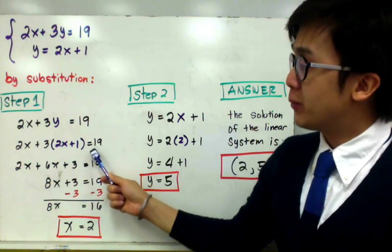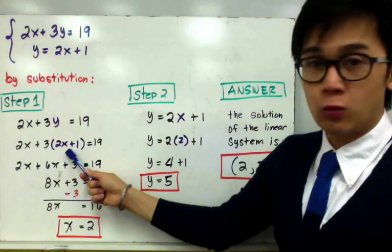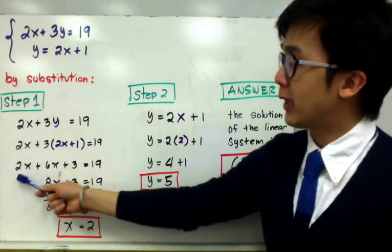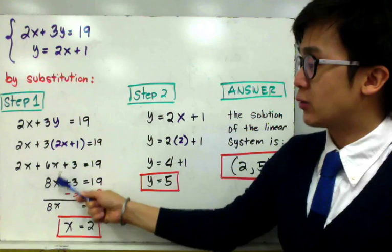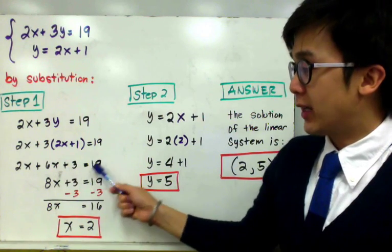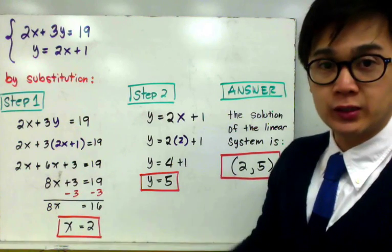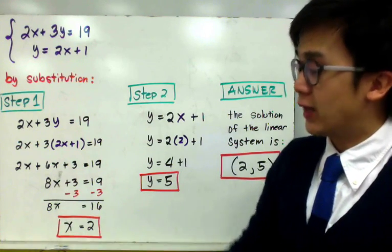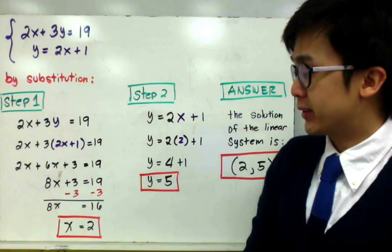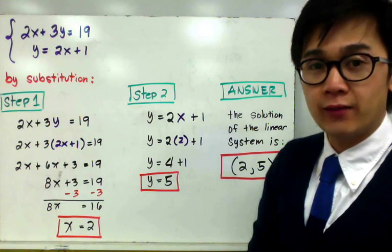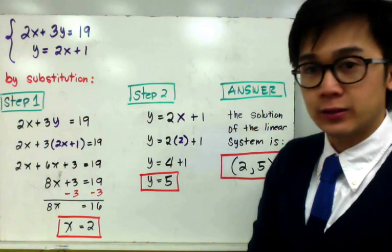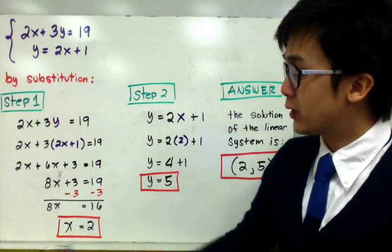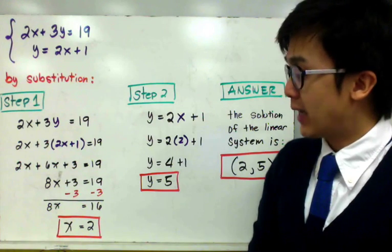By distributing 3 to 2x plus 1, we get 6x plus 3. Combining like terms, 2x plus 6x gives us 8x, so we have 8x plus 3 is equal to 19. We subtract 3 from both sides, leaving us with 8x is equal to 16. Dividing both sides by 8, x is equal to 2. We have found the first coordinate of our solution.